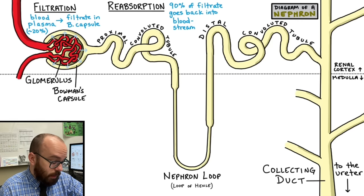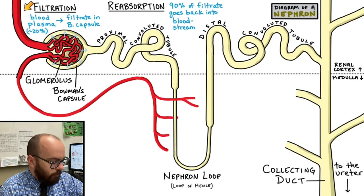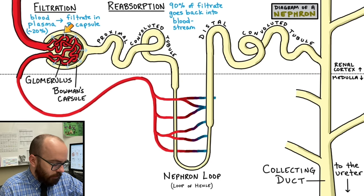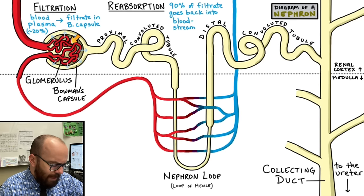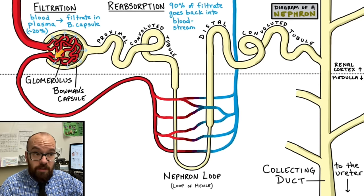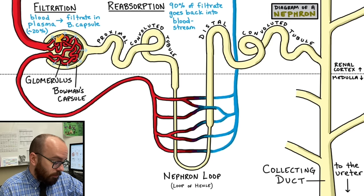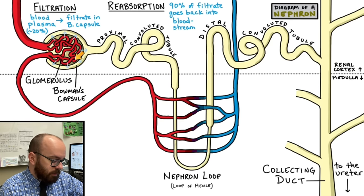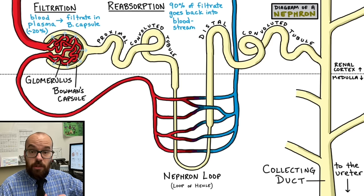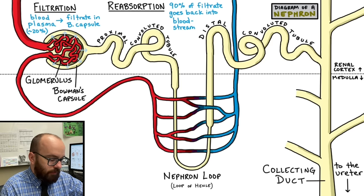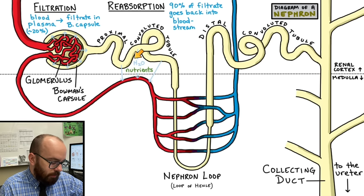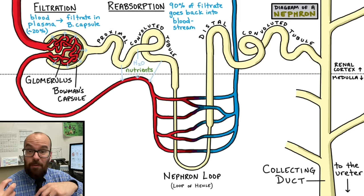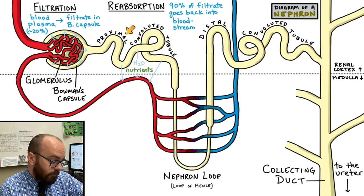We haven't talked about the reabsorption component yet. Blood comes in, and about 20% of blood plasma filters out into the Bowman's capsule from the glomerulus. But 80% of the plasma stays in these blood vessels, along with all the red and white blood cells — they're too big to go through filtration. A lot of the bigger proteins in blood plasma are also too big to get filtered out. That blood vessel takes the blood over to the nephron loop where reabsorption occurs. In the proximal convoluted tubule, H₂O and nutrients get reabsorbed back into the bloodstream. About two-thirds of the water that was filtered out reabsorbs back here.